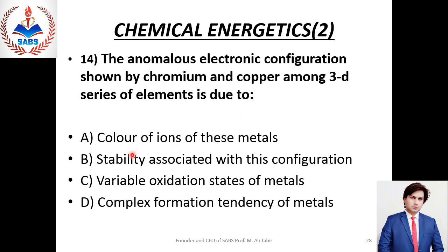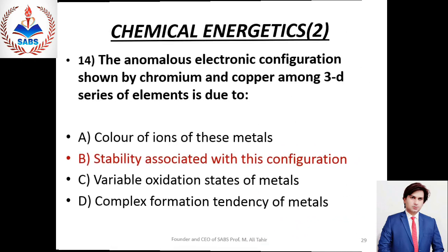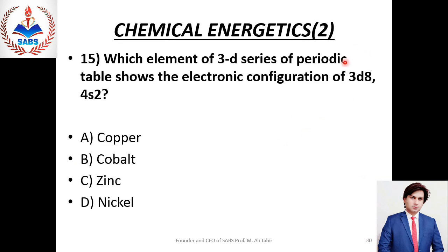Right option must be Beta — stability associated with this configuration. Next question No. 15: Which element of the 3D series of the periodic table shows the electronic configuration of 3D8 and 4S2? اس کے پاس total 28 electrons ہونے چاہیے، اور ایسا element جس کے پاس 28 electrons ہیں اسے ہم nickel کہتے ہیں۔ Right option is Delta.